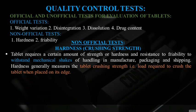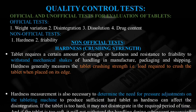A tablet requires a certain amount of strength or hardness and resistance to friability to withstand mechanical shocks during handling in manufacturing, packaging, and shipping. Hardness generally measures the tablet crushing strength, or the load required to crush the tablet when it is placed on its edge. Force is applied, and when the tablet just fractures, that force is recorded.